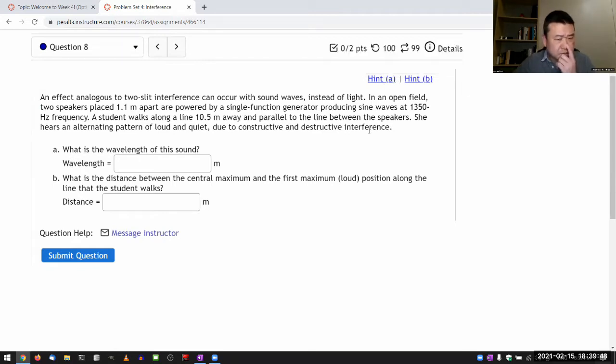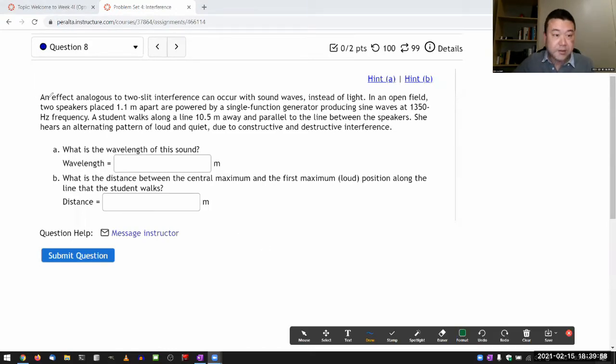Let me just draw the picture, and then I will not do the remainder of the question. It says an effect analogous to two-slit interference can occur with sound waves instead of light in an open field. Two speakers are placed 1.1 meters apart. So I have two speakers placed some distance apart, and what these speakers serve as is the source of sound.